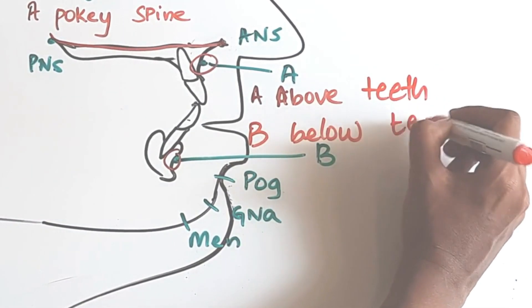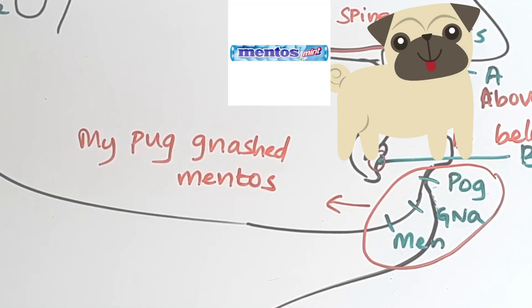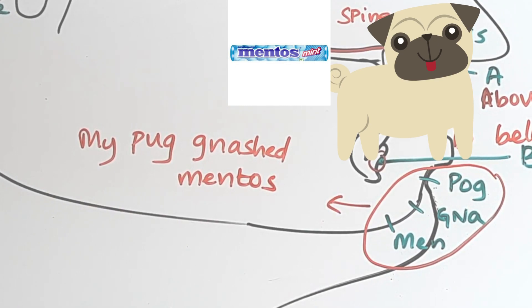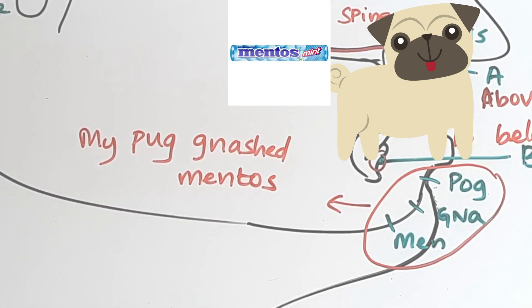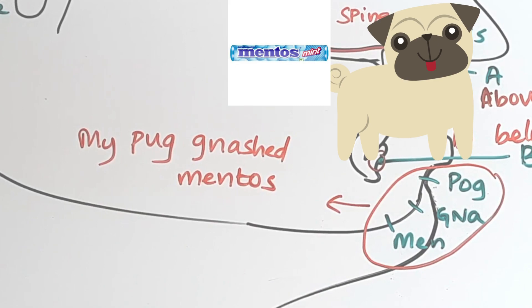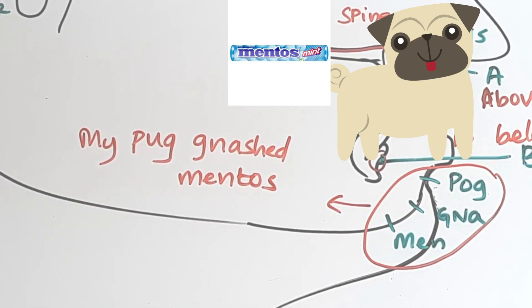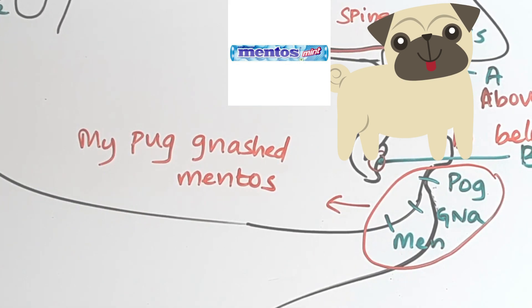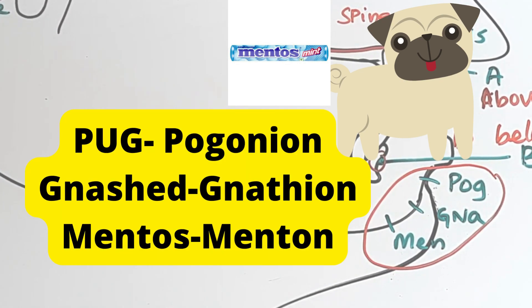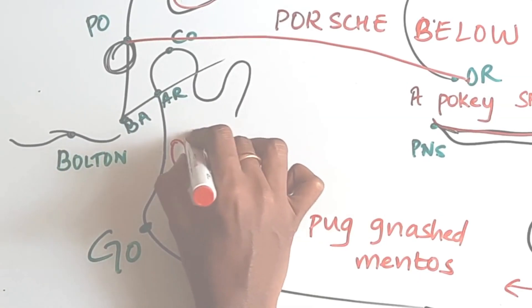So B is below the teeth. Coming to the chin, you can remember, my pug gnashed those mentos. So pug is a dog. Gnashed means grind between the teeth and mentos, we all know what is mentos. So, my pug gnashed mentos. Pug for pogonion, gnashed gnathion, mentos for menton.